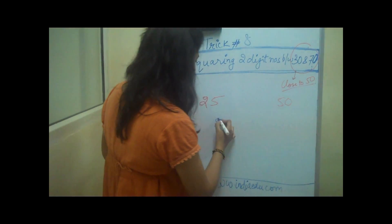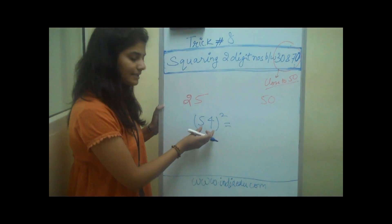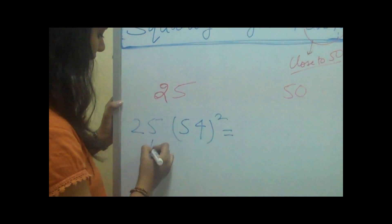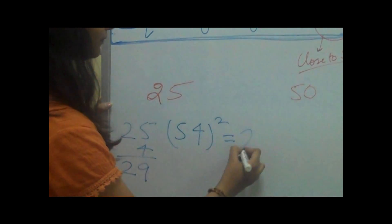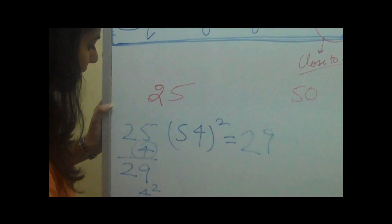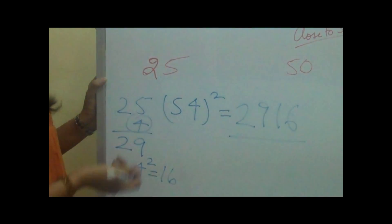For example, if we have a number 54 and we want to square it. Since 54 is 4 more than 50, we'll add this 4 in 25 which makes 29 and then we'll square this 4. 4 squared is 16 and we'll put it here. This is the answer.